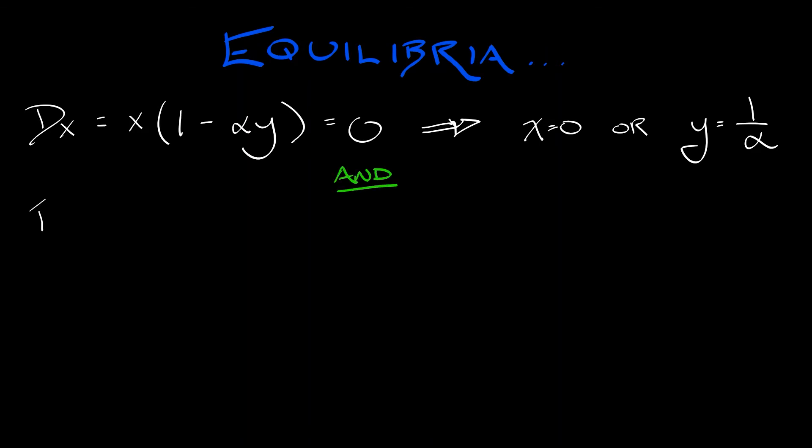We're going to do what we always do - look for the equilibria. dx/dt = x(1 - αy), set equal to zero, gives either x = 0 or y = 1/α. dy/dt = y(-r + βx) = 0 gives y = 0 or x = r/β.